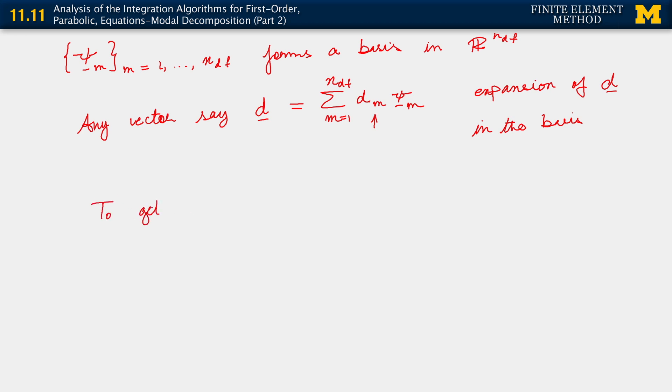To get the coefficients d sub m, what we do is that we first of all construct m d equals sum m equals 1 to n d f, d m, m psi m, just using linearity.